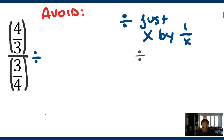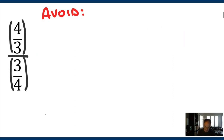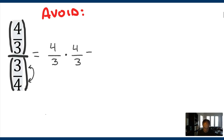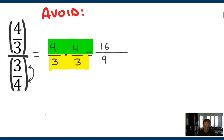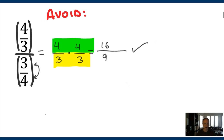Division is just multiplication by the reciprocal. Remember: 10 divided by 2 is equivalent to 10 times 1/2. Same thing happens here. So to accomplish the division for these fractions, convert it into a multiplication problem. This becomes 4/3 times the reciprocal of the bottom piece, which is also 4 divided by 3. When you multiply two fractions, you multiply across the top and multiply across the bottom. So this becomes 16 over 9. The same thing is true when those 4s and 3s are replaced with x's or expressions with variables.